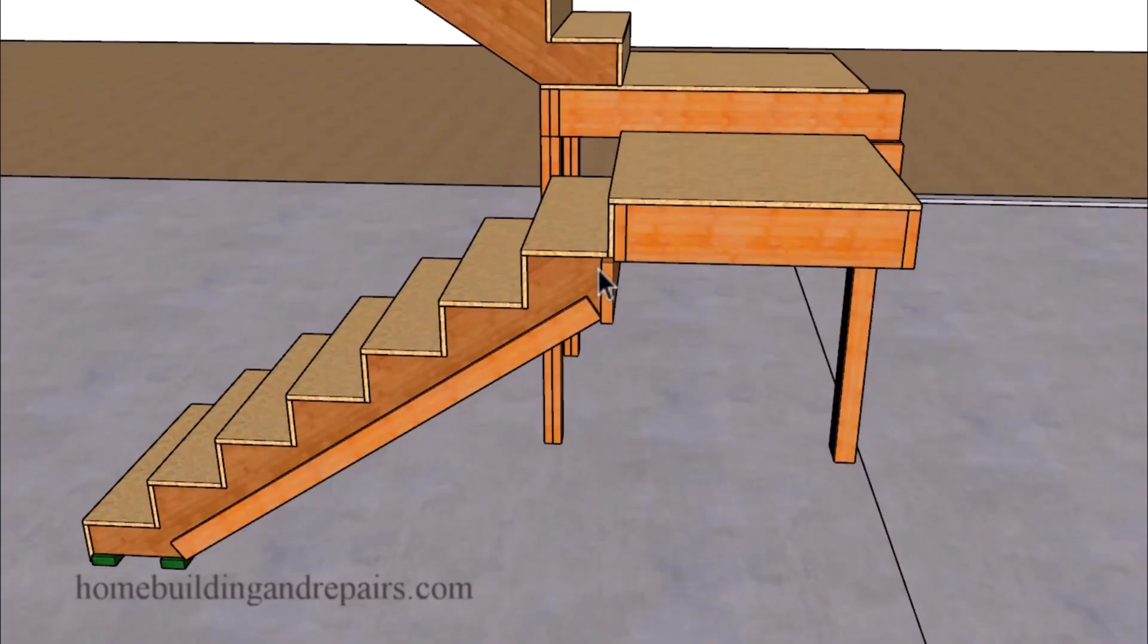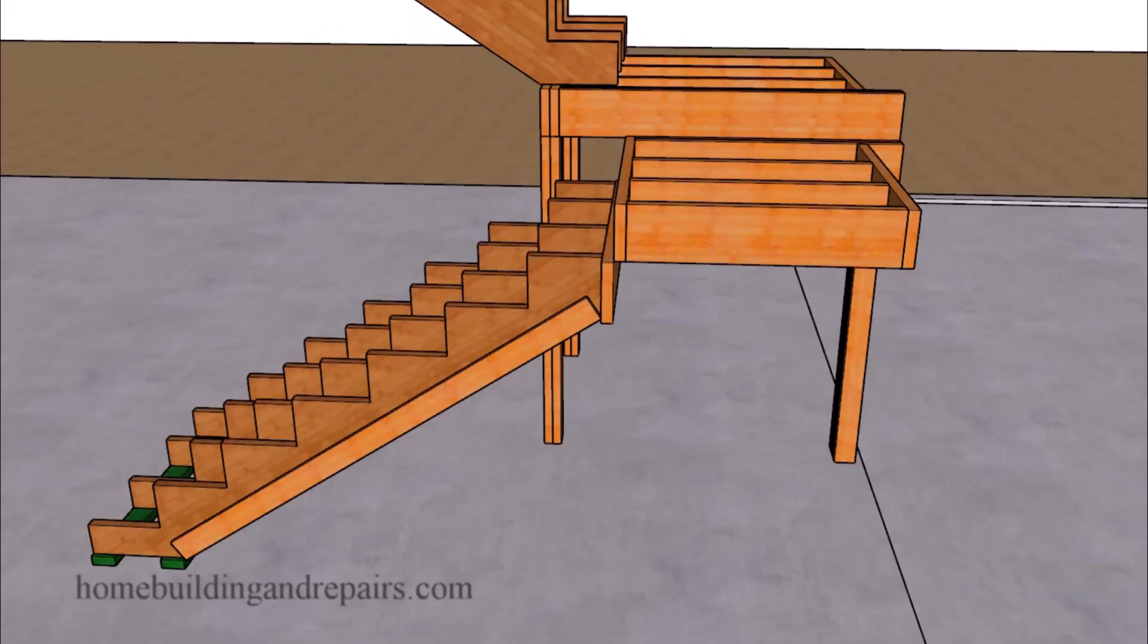Instead we're going to deduct the width of the riser from this side of the stringer, and then we can move the entire stairway over three quarters of an inch. This is going to give me three quarters of an inch more width in the landing here. Hopefully that makes sense.